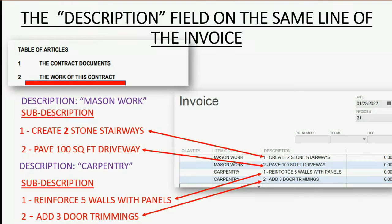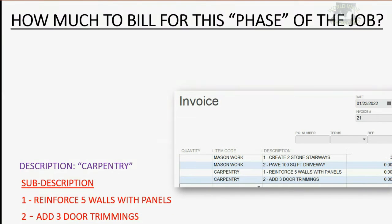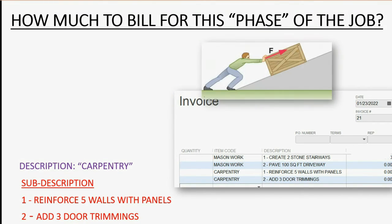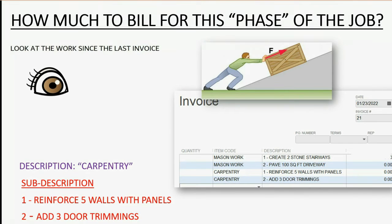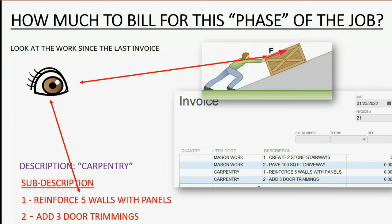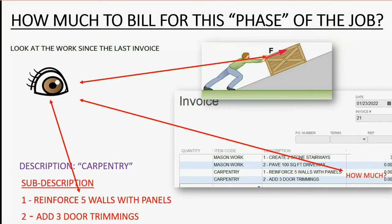How do you know how much to bill for any particular phase of the job? It's common sense. You would physically look at all of the work that had been done for that particular item since the last invoice, count it, use math, and then compare it to the sub-description exactly as it's written in the contract. Then you would decide for that particular invoice, for that part of the job, exactly how much to bill, comparing the work to what it says in the contract.